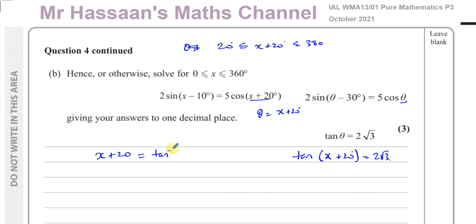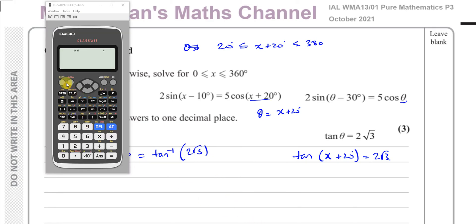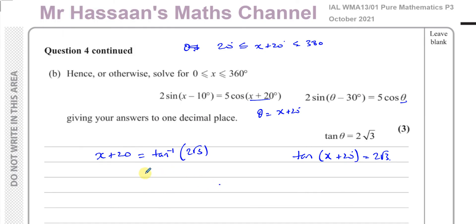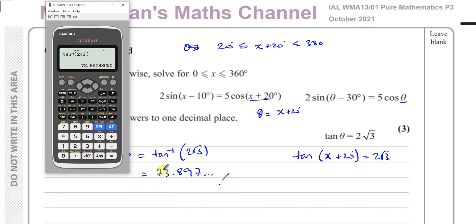So x + 20 is inverse tan of 2√3. Let's see what that gives us. We're going to have inverse tan of 2 times the square root of 3, and that gives us 73.897 continuing.